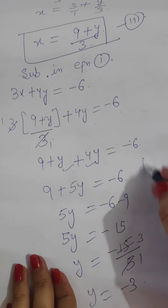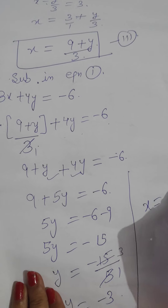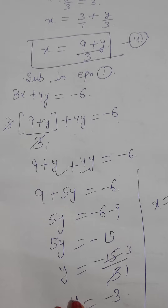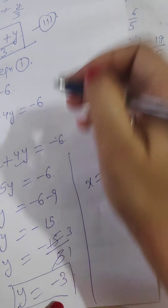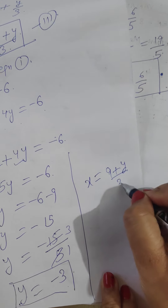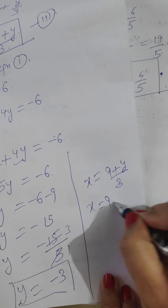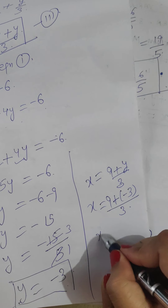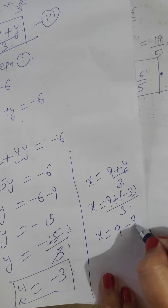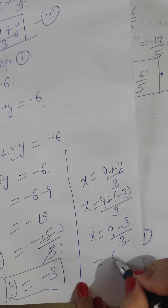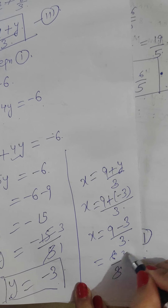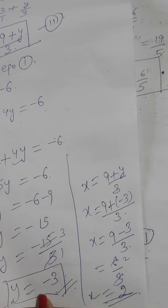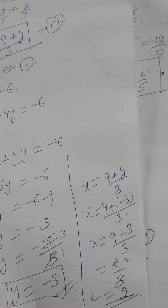Our solution: substituting y equals minus 3 back into x equals 9 plus y upon 3 gives x equals 9 plus (minus 3) upon 3, which equals 9 minus 3 upon 3, which equals 6 upon 3, and that equals 2. So x equals 2 and y equals minus 3. This is the solution of these equations.